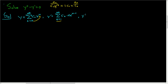Taking the derivative again: y double prime starts at two, because the first term also goes away. So y double prime is the sum from two to infinity of c sub n times n times (n minus one) times x to the n minus two. Notice we only differentiate the variable terms; the constant terms just hang out.